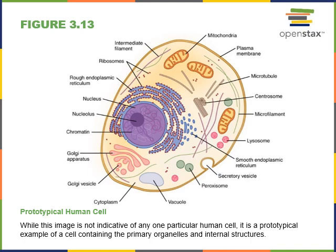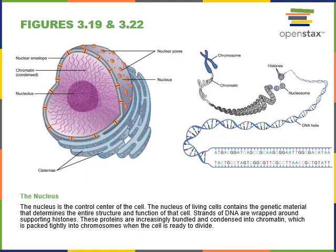The nucleus is the control center of the cell. It contains the genetic instructions, which are found in chromosomes made of chromatin. The chromatin is made of DNA and proteins. DNA is the genetic material that forms a double helix structure — a long polymer made from nucleotides abbreviated A, T, G, and C.